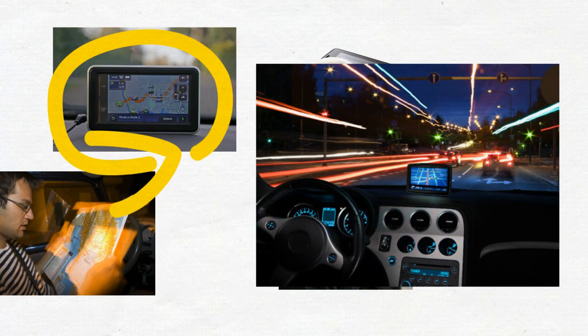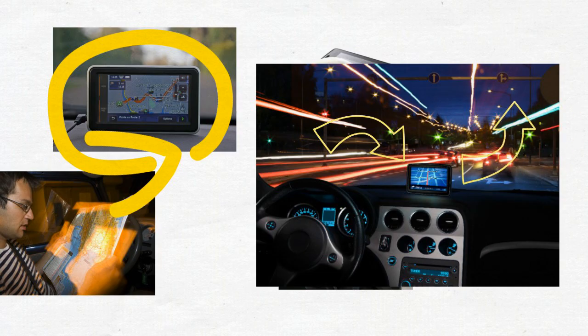Especially at night, looking at a navigation system can steal your night vision. Looking from the dark roadway to that bright navigation screen and then back again is dangerous, because your eyes have to adapt to the different lighting.